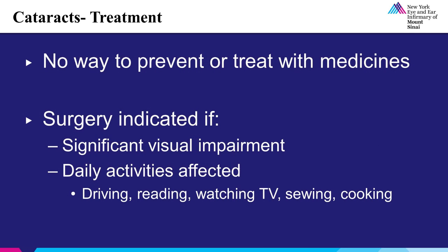With regards to the treatment of cataract, there is no scientifically proven way to prevent a cataract or treat it with medication. The only proven successful treatment is removal of the cataract surgically. Surgery may be indicated if the cataract is causing significant visual impairment by affecting one's activities of daily living, such as driving, reading, watching television, sewing, cooking, etc.